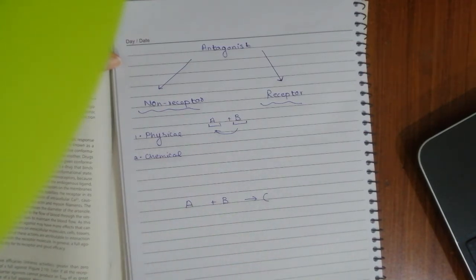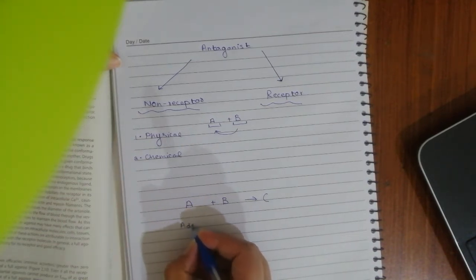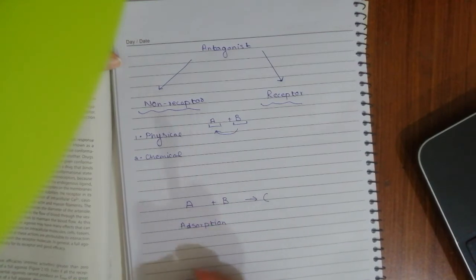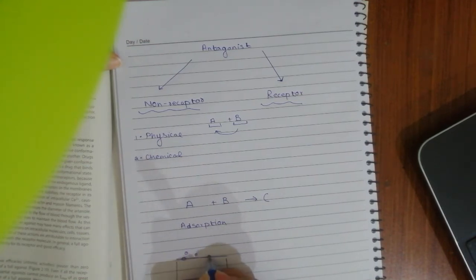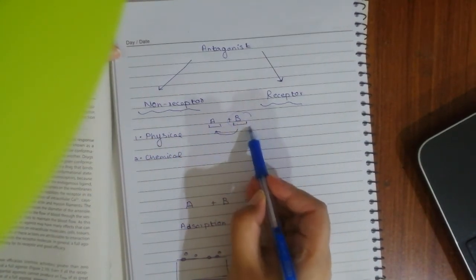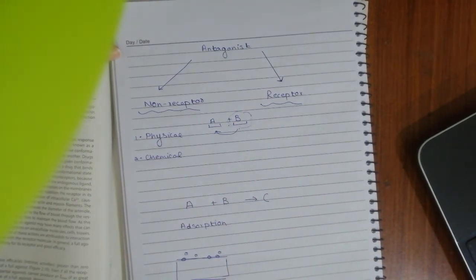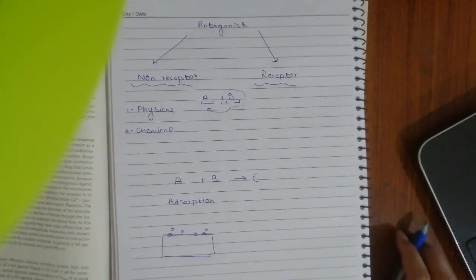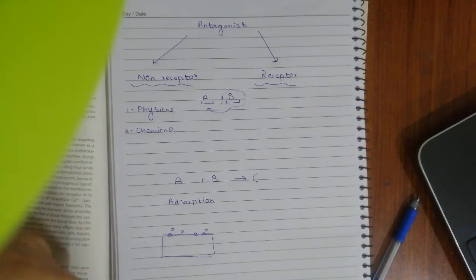In a physical reaction, no new chemical substance is formed. For example, dissolving sugar in a bottle is a physical process, not a chemical reaction. Adsorption in chromatography is another physical process — liquid molecules stick to the solid phase through physical interactions. So the first kind of non-receptor antagonism works because of a physical reaction rather than a receptor interaction.